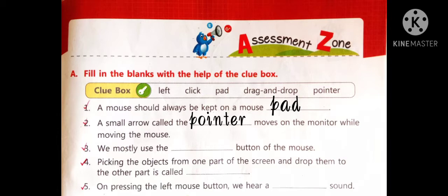Three number. We mostly use the dash button of the mouse. We mostly use the left button of the mouse. So, the correct option is left. Four number. Picking the objects from one part of the screen and drop them to the other part is called drag and drop.